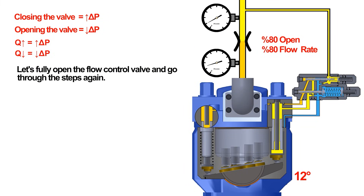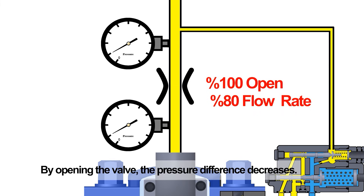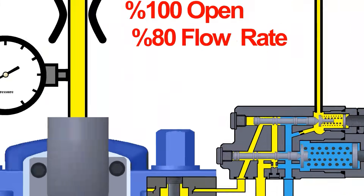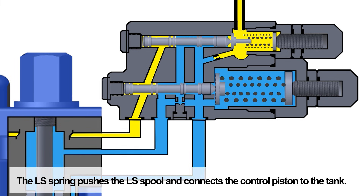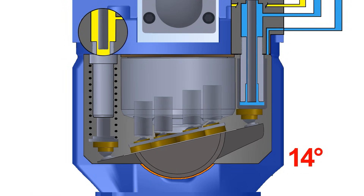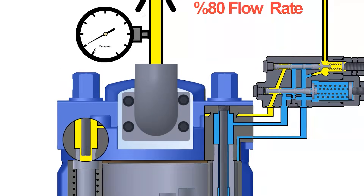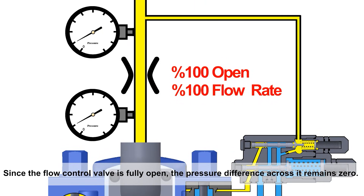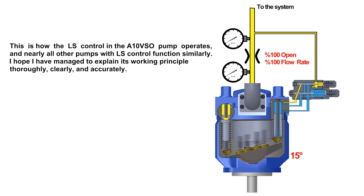Let's fully open the flow control valve and go through the steps again. By opening the valve, the pressure difference decreases. The LS spring pushes the LS spool and connects the control piston to the tank. The bias piston pushes the swash plate toward maximum displacement. Since the flow control valve is fully open, the pressure difference across it remains zero. This is how the LS control in the A10VSO pump operates, and nearly all other pumps with LS control function similarly.